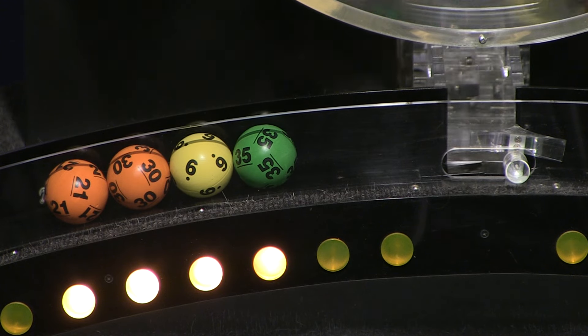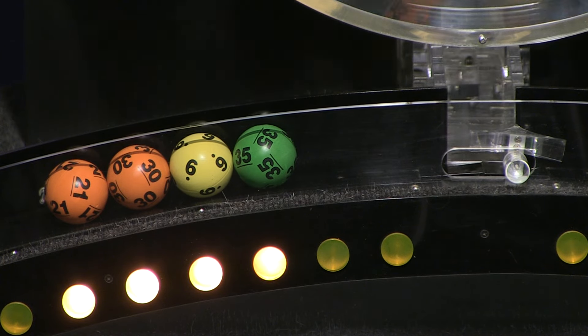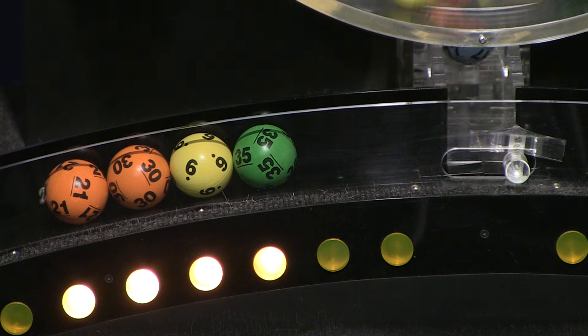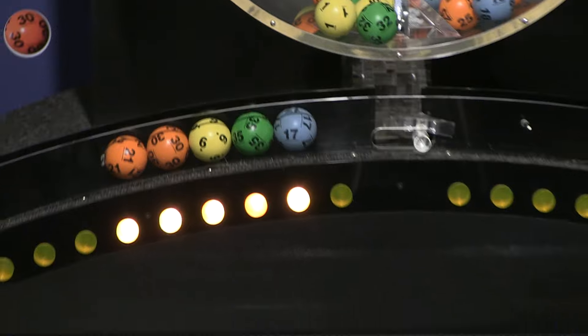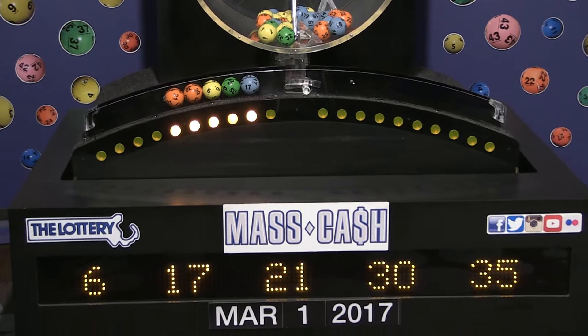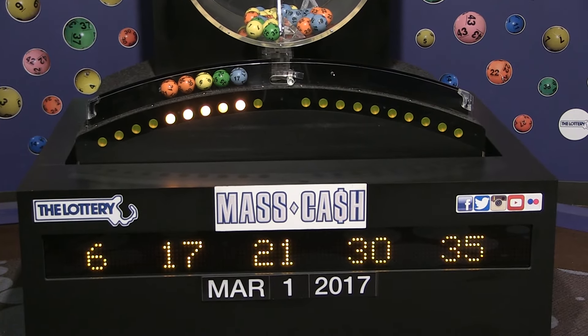Up next is 35, and the final ball in this sequence is number 17. Once again, the winning Mass Cash numbers for Wednesday, March 1st are 6, 17, 21, 30, and 35.